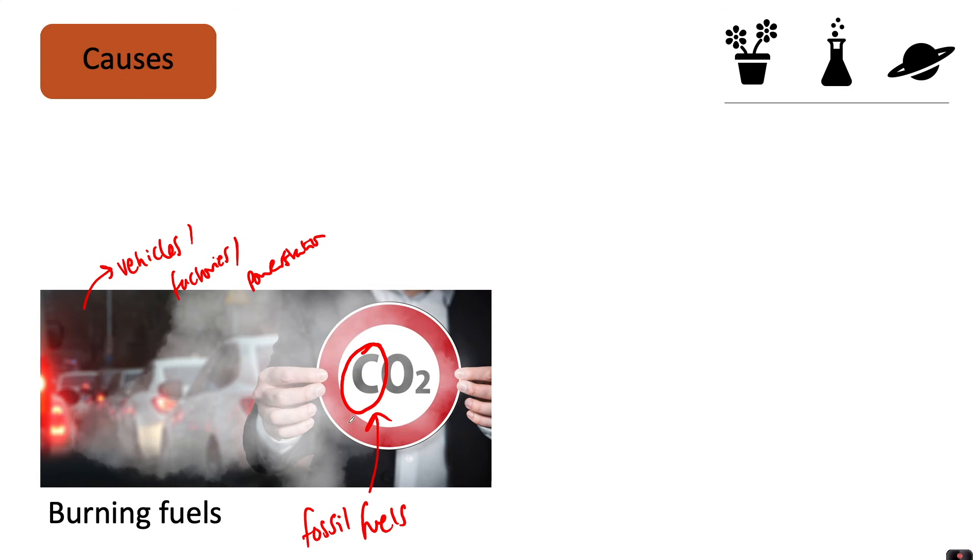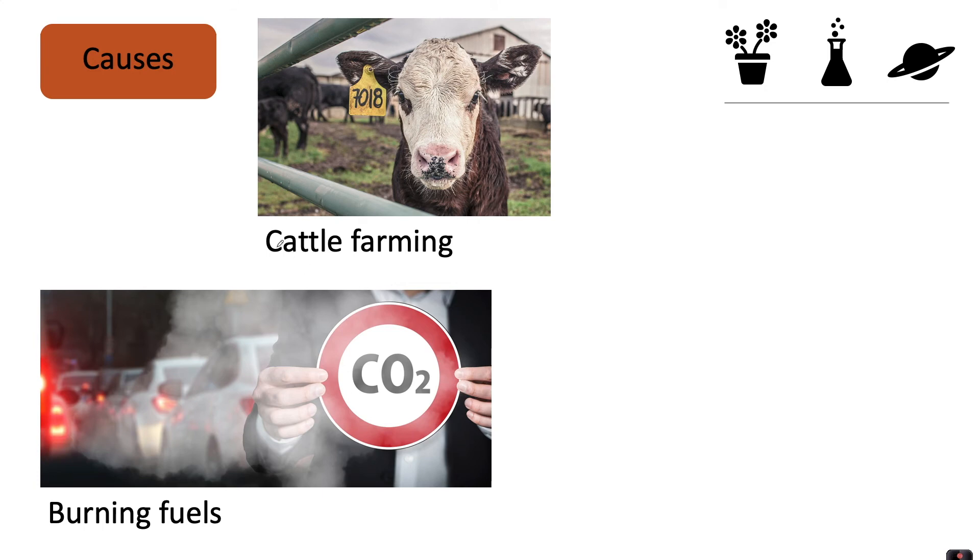Cattle farming is another big issue because cattle release a lot of methane, which is CH4. Methane is another greenhouse gas. A lot of our planet has been carved up for farming, and cattle farming produces methane, causing global warming and climate change.